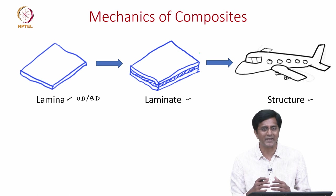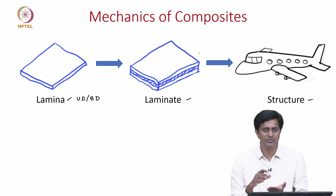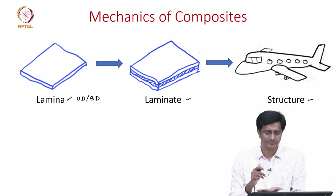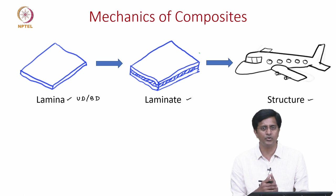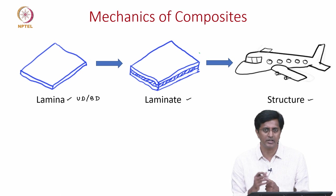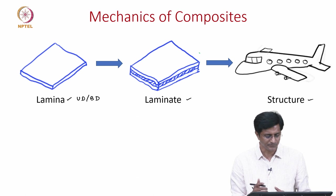First we need to understand what is the mechanics of the lamina, because once we have a clear understanding of the lamina then we can move to the laminate, where the laminate is simply a stacking of individual layers of lamina. Once we stack these layers together we need to understand the mechanics of these laminates. When we say mechanics of laminate we want to understand for a given applied load how these deform, or if we know the deformation we need to be able to tell at what loads we can achieve a targeted deformation or deflection.